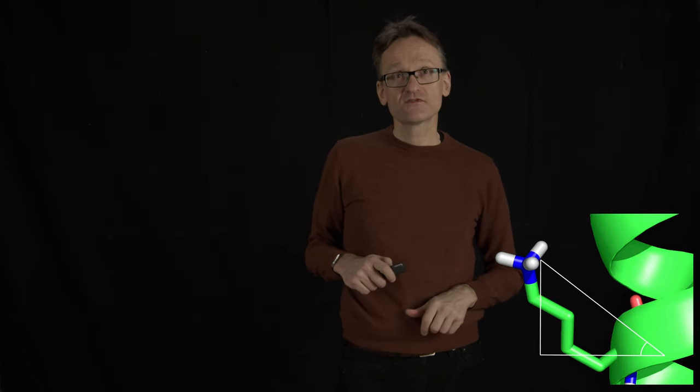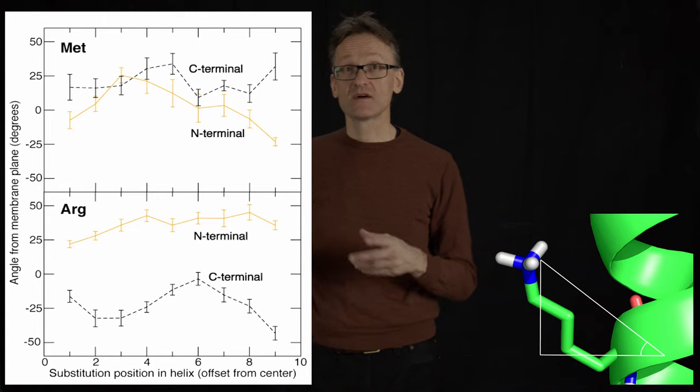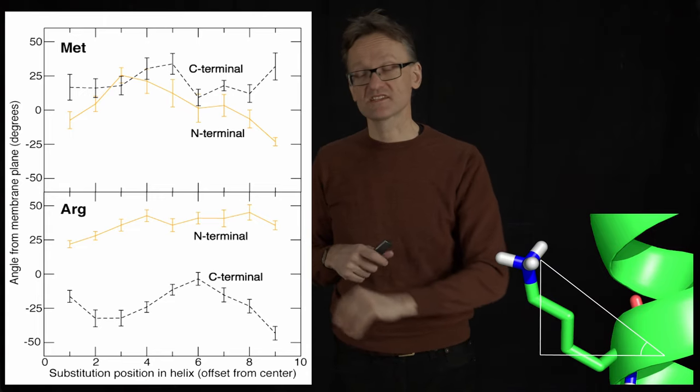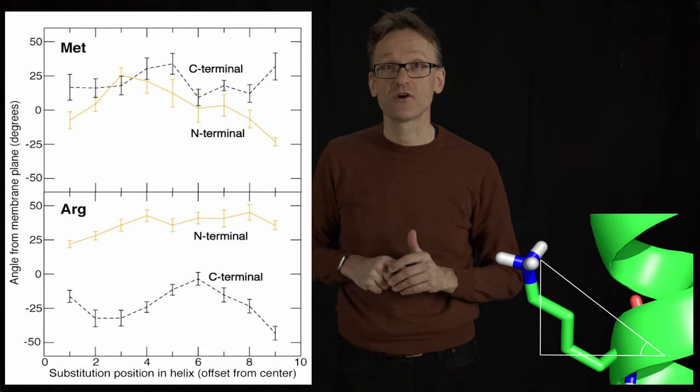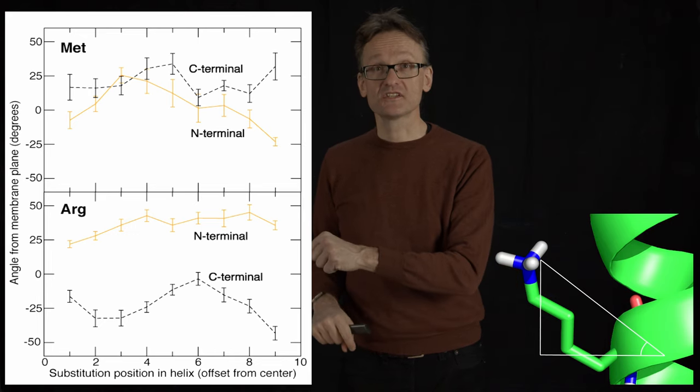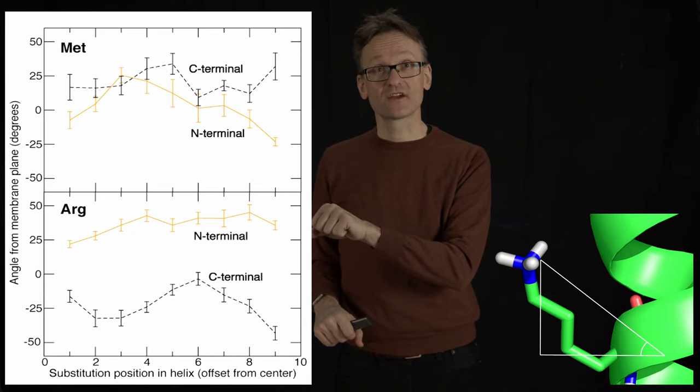I'll show you this first in a simple simulation. This is just two examples: a methionine side chain and an arginine side chain. The exact values here are not important, but you see how there's, in particular for the arginine, a clear snorkeling effect.